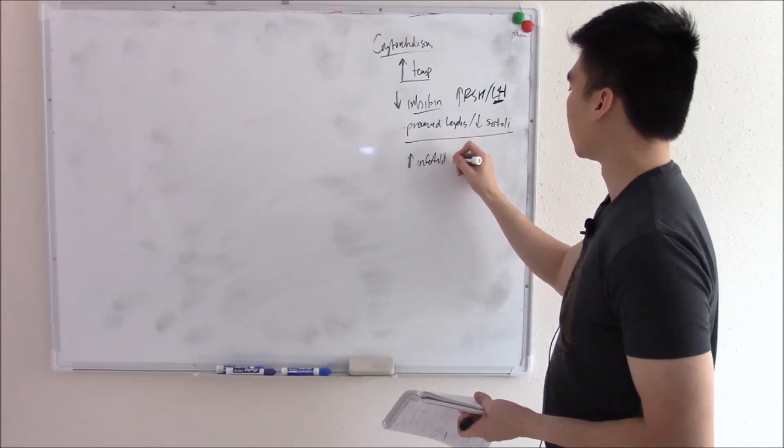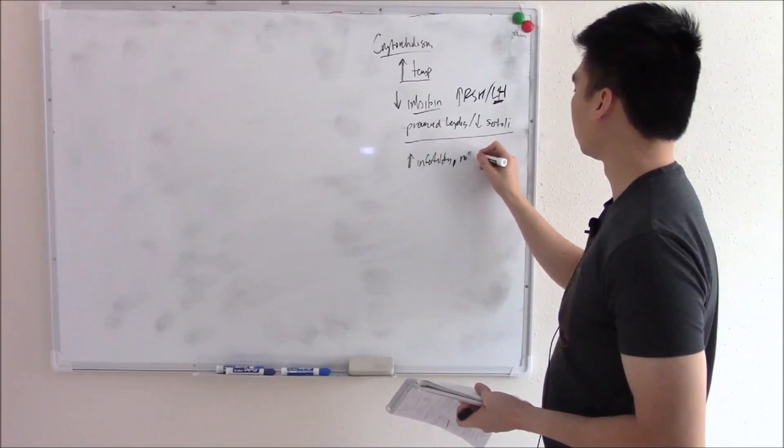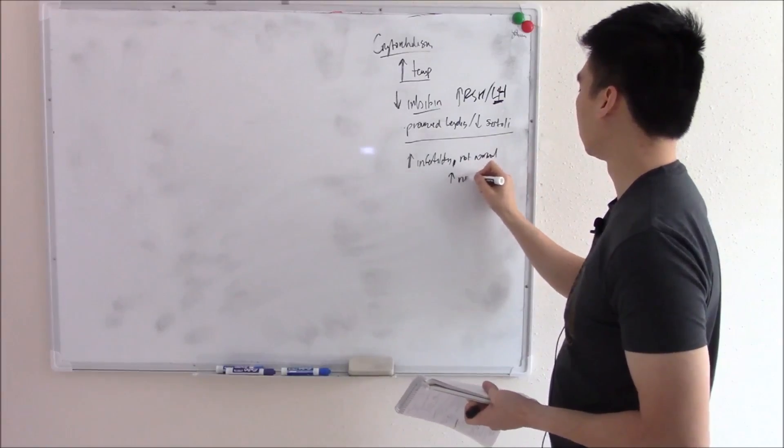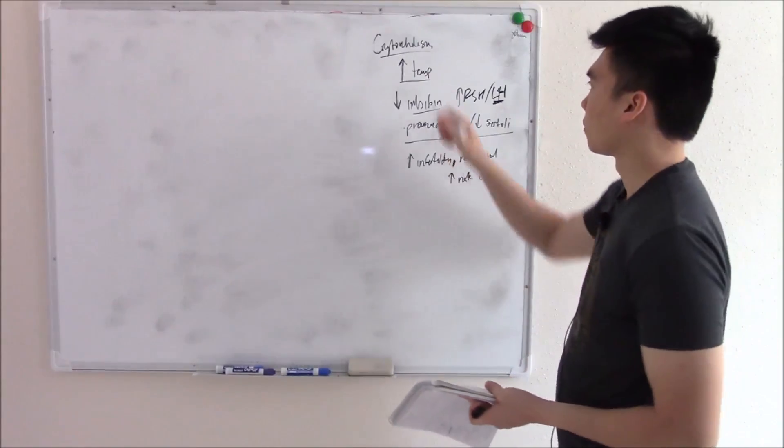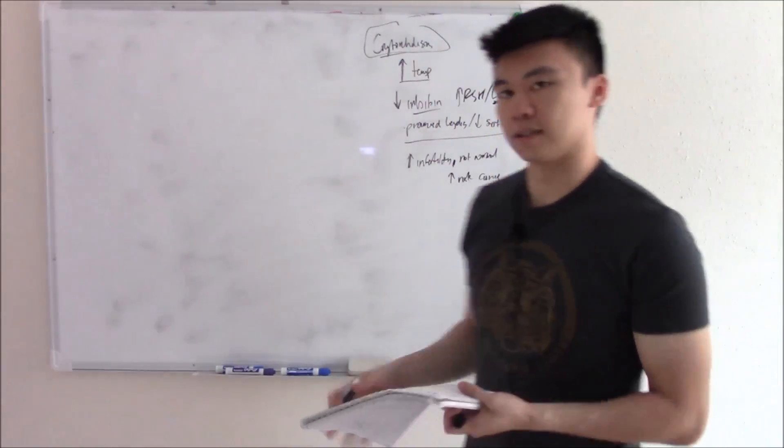And because they're not normal, you're at an increased risk of cancer, testicular cancer. That's all from the failure of your testes to descend as cryptorchidism.